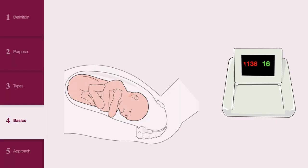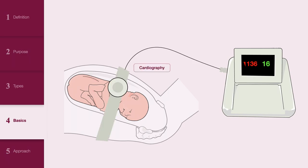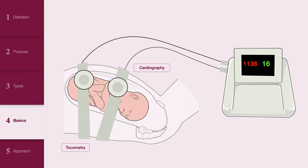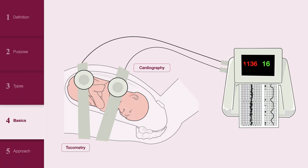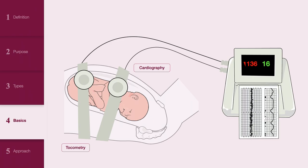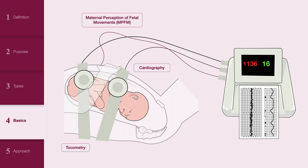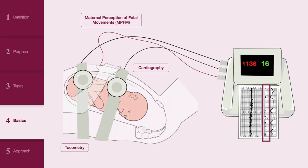A CTG machine consists of two transducers. One monitors the fetal heart rate using Doppler ultrasound, and the other records uterine contractions using a tachometer. These readings are displayed on a continuous trace, which forms the basis of CTG interpretation. Some machines also indirectly measure fetal movements through a button that the mother presses whenever she feels fetal movements, recorded as event markers on the CTG trace to help correlate fetal movements with fetal heart rate patterns.